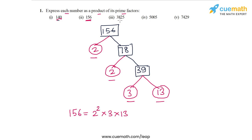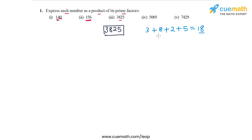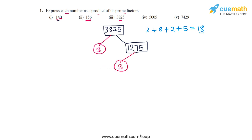Now let's do part 3, which is the number 3825. This number is not even, but if we add its digits — 3 + 8 + 2 + 5 — the sum is 18, and since 18 is a multiple of 9, we know 3825 is a multiple of 9. So we can take out a factor of 3 twice. Taking out a factor of 3 first leaves 1275, and dividing 1275 by 3 leaves us with 425.